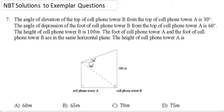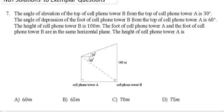Hey guys, so we are on to question 7 and it says that the angle of elevation of the top of the cell phone tower B from the top of cell phone tower A is 30 degrees.